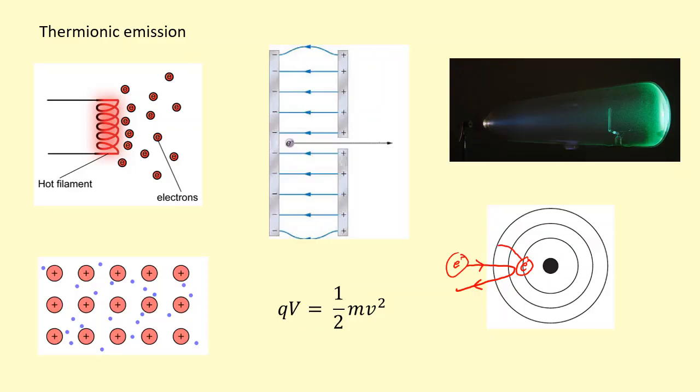So this electron can jump to a high energy level and then when it de-excites back to a low energy level it will emit a photon with the energy corresponding to the gap between the energy levels.